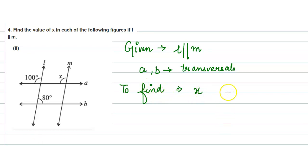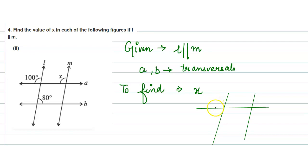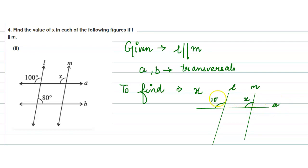We have two parallel lines and a is the transversal. This is line l, this is m, and this is transversal a. These two angles — x and 100 degrees — are on the same side of the transversal and in the same direction.